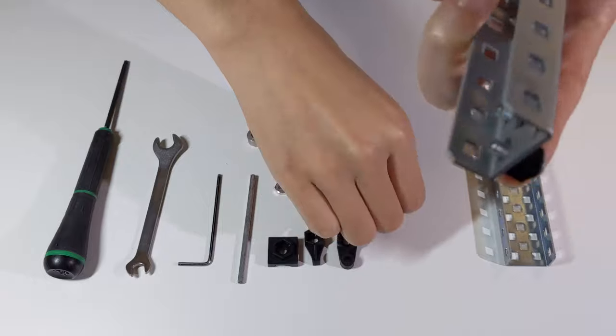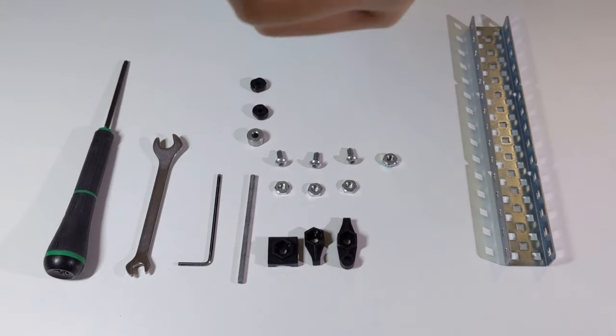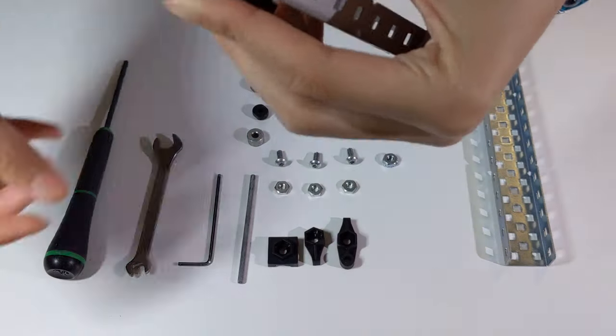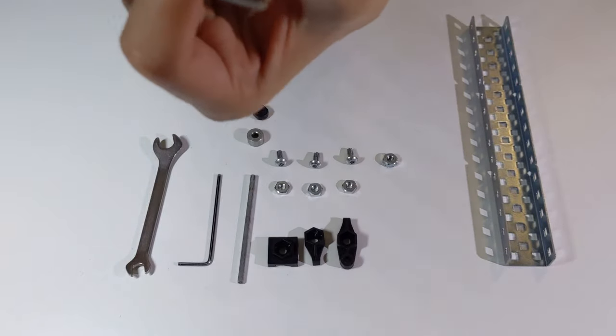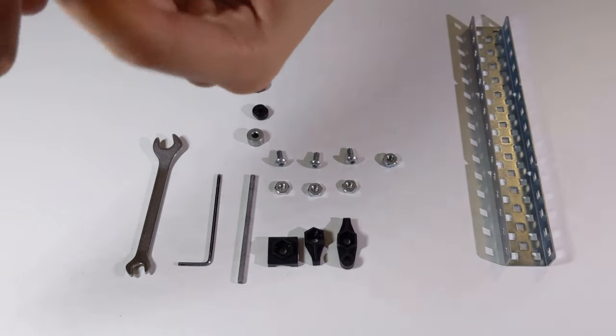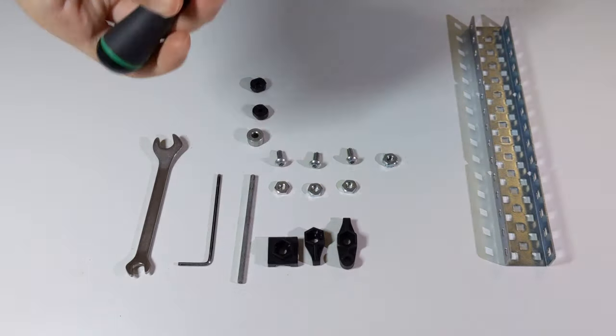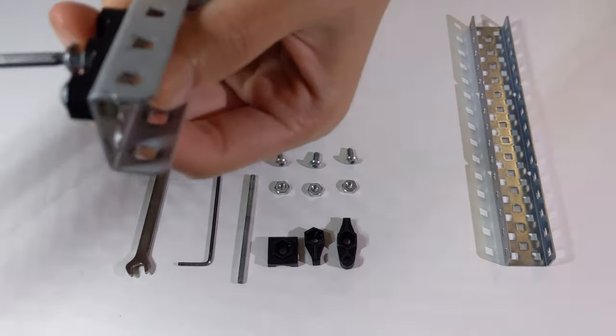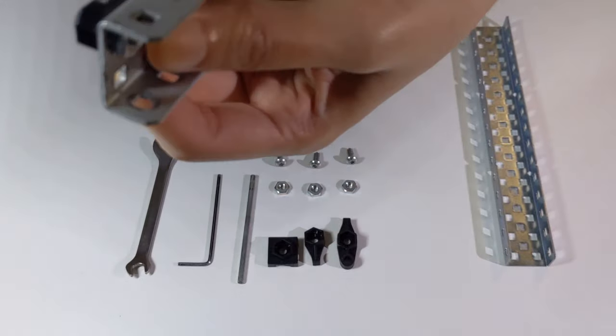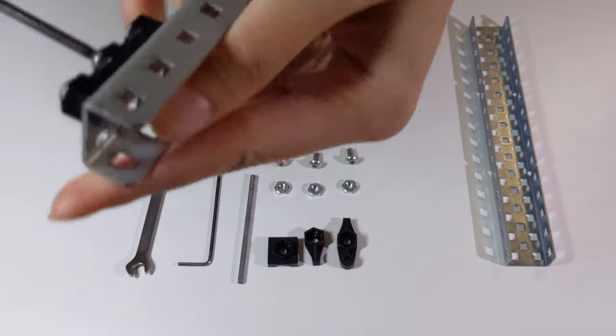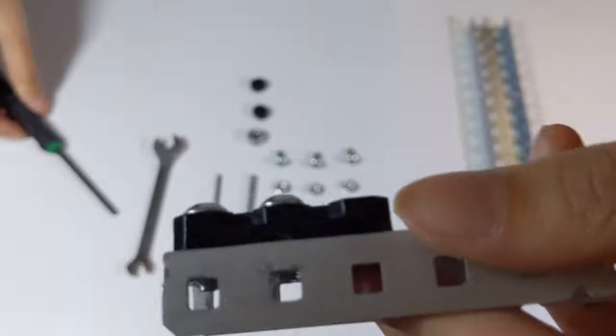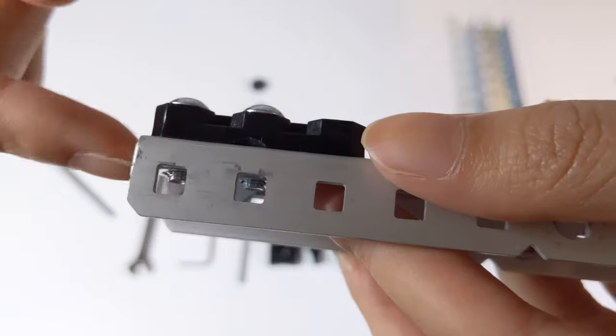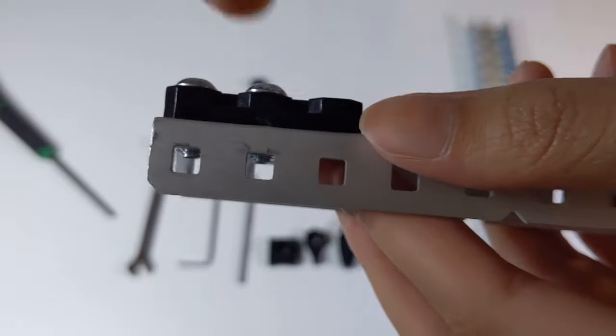So I'm just going to screw this in. So like you can see how all the bumps are into the hole because it's just flush against the metal and there's nothing, there's no space in between.